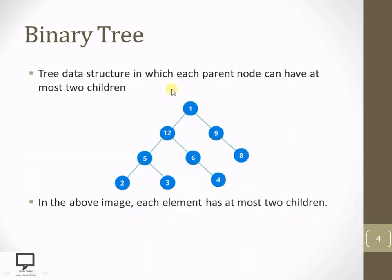So what is a binary tree? A binary tree is a non-linear data structure in which each parent node can have at most two children — because it is a binary tree, and binary means two. So every parent node can have a maximum of two children.